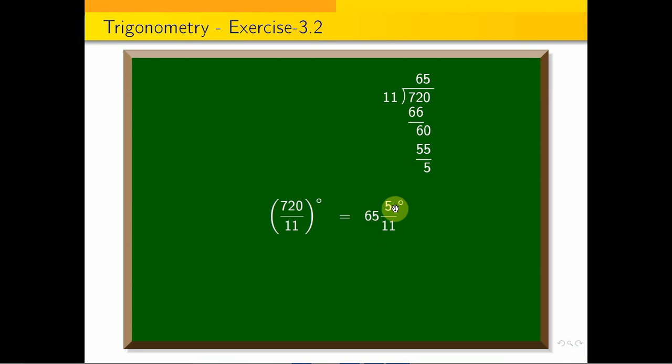5/11 degrees in minutes equals (5/11) × 60 = 300/11 minutes.